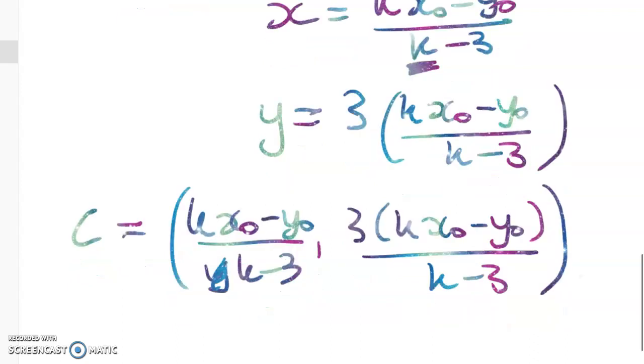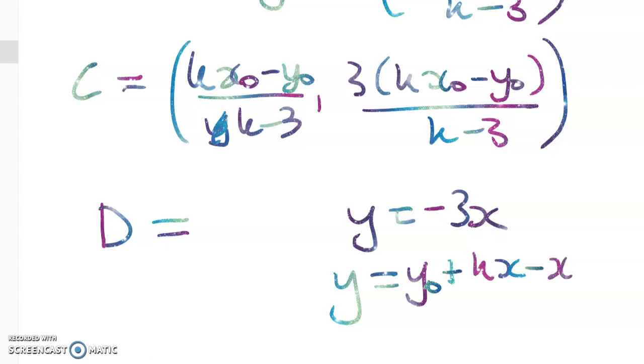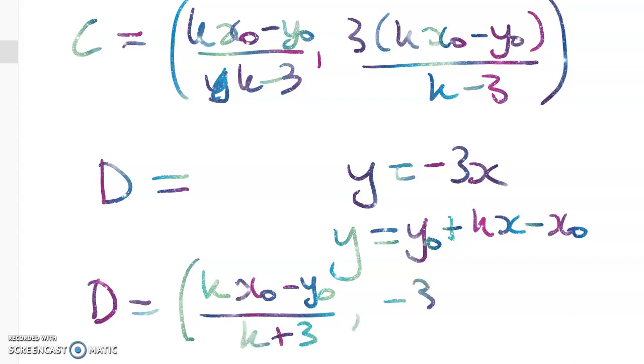Now we're going to do the same thing for D. In the interests of time, I'm figuring if you've watched this far, you're probably going pretty well. So point D, we're going to equate the other asymptote, y = -3x, with the same point-gradient equation. So we get exactly the same thing here: y₀ + k(x - x₀). And if you work through the algebra for that, which actually isn't long at all, you get these coordinates for point D. My y coordinate will be -3 times the x coordinate, because it's on the other asymptote.